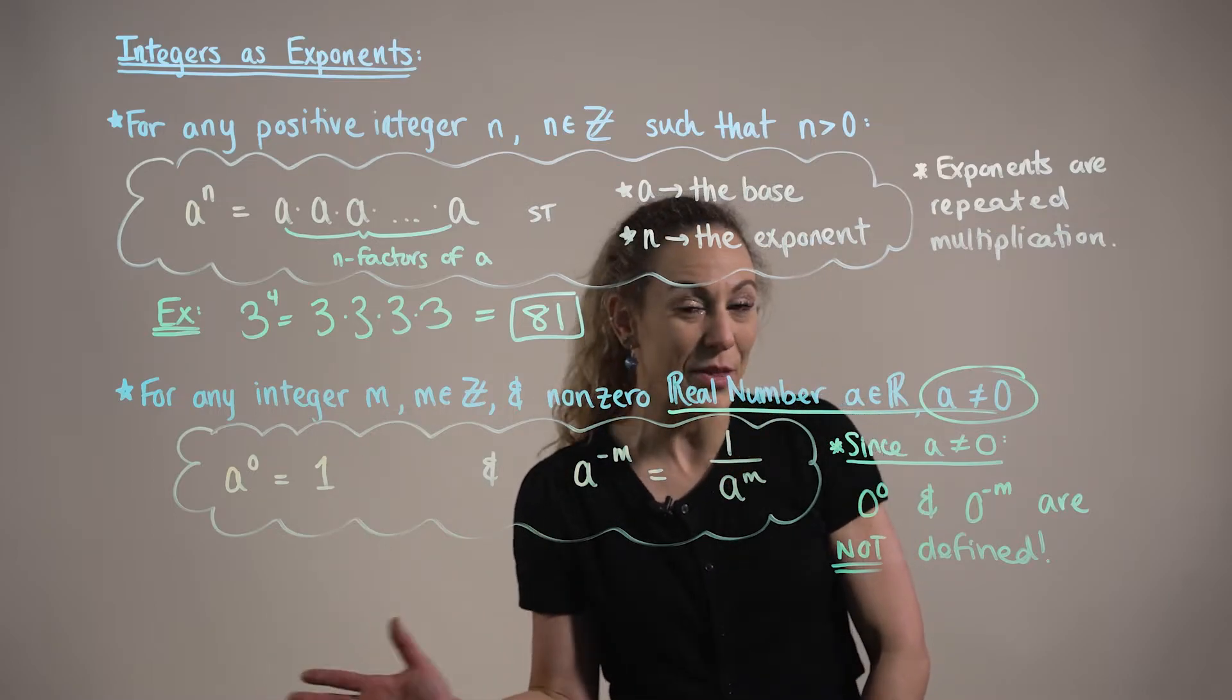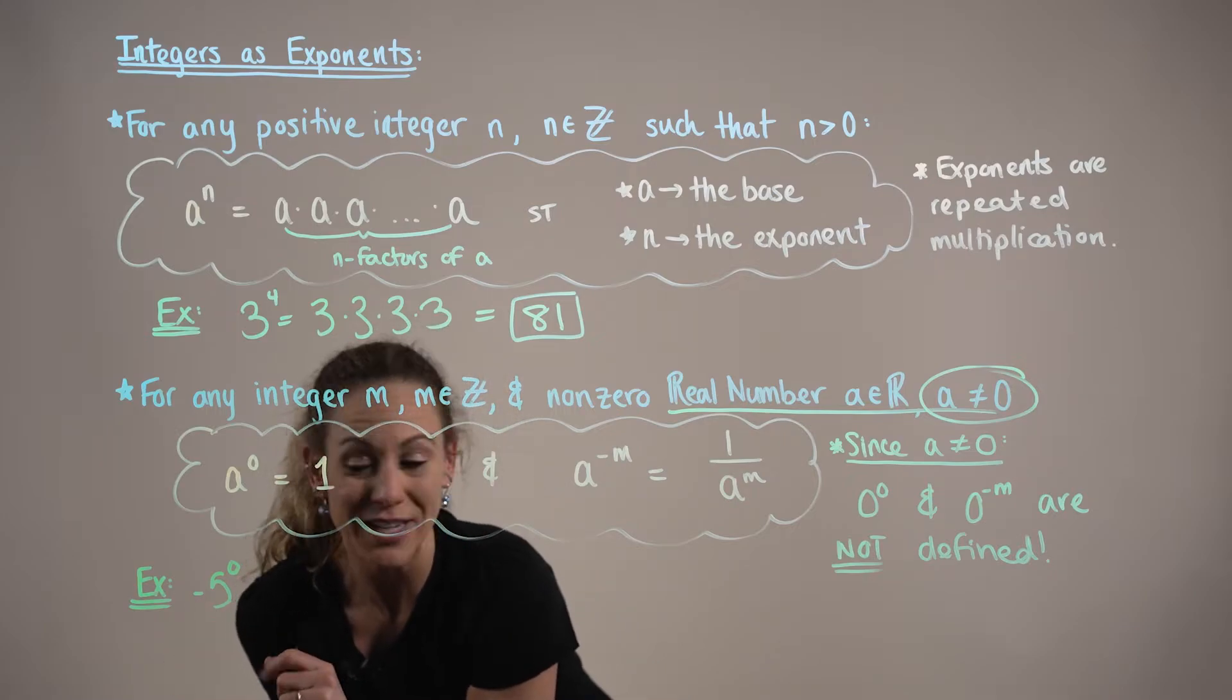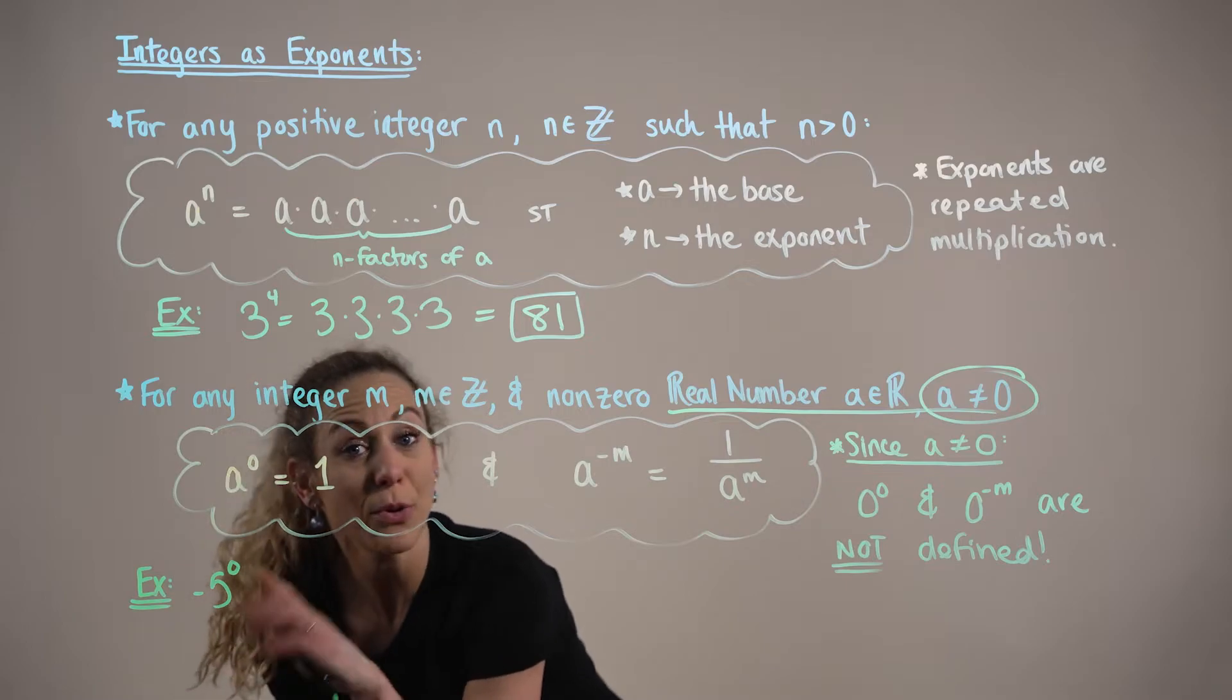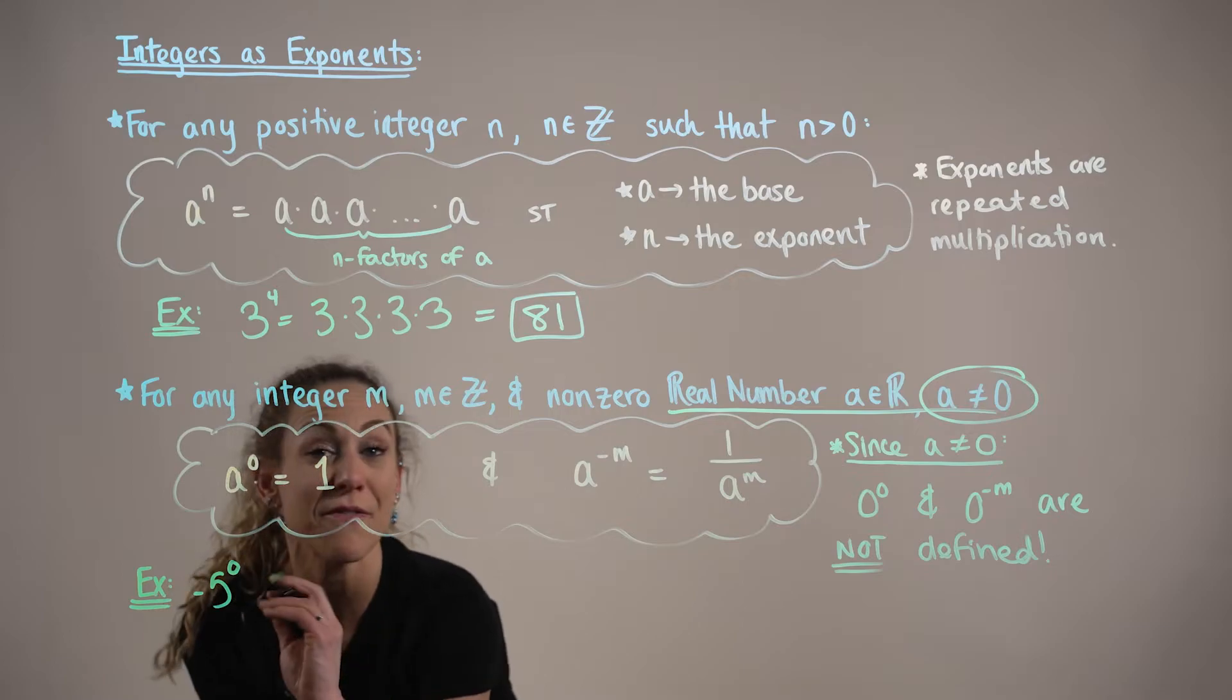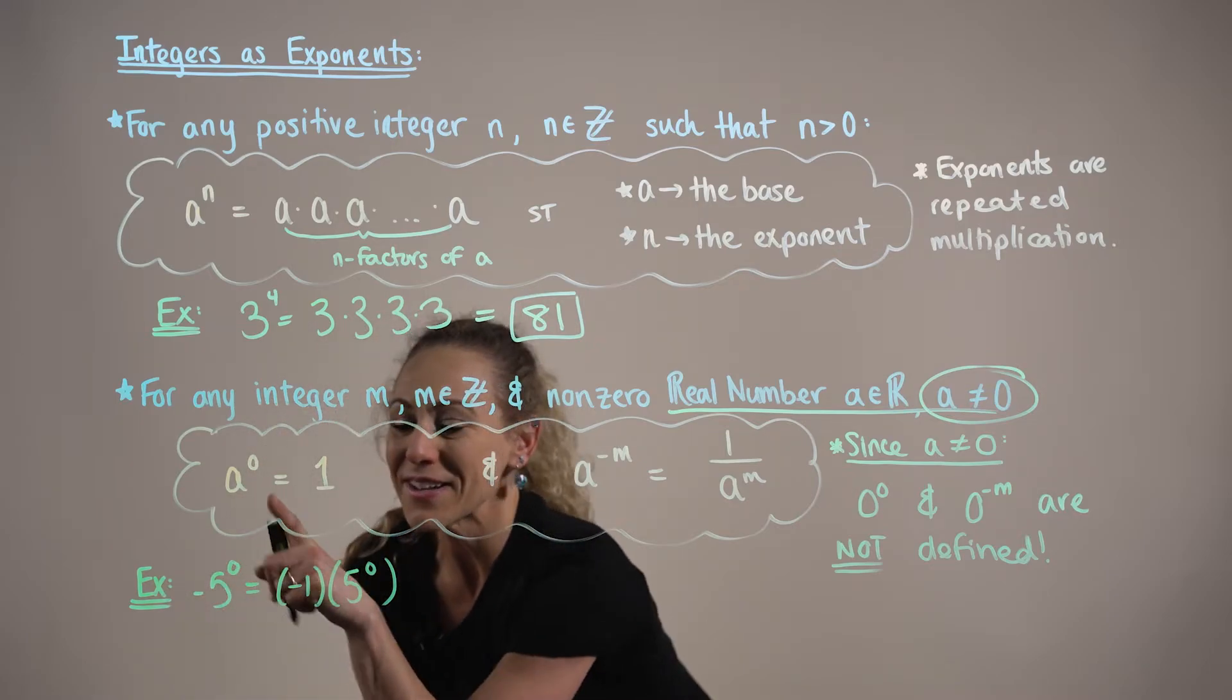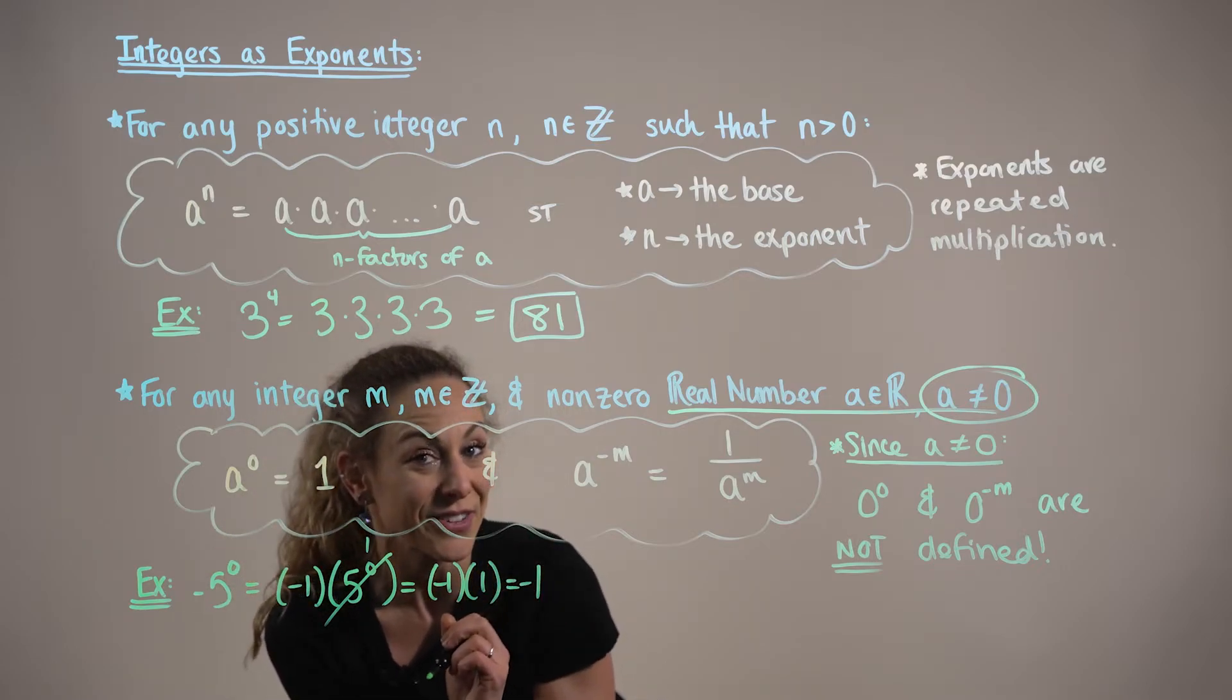Before moving on to some of the properties of exponents, let's quickly consider some examples. Suppose we were asked to evaluate the expression negative five to the zero power. We have to be careful here because we have a negative and the five, but no parentheses. So we can't assume that negative is attached to the five. We would want to rewrite this as negative one multiplied by five to the zero power. Anything raised to the zero is going to go to one. So we have negative one multiplied by positive one, leaving us with a final answer of negative one.